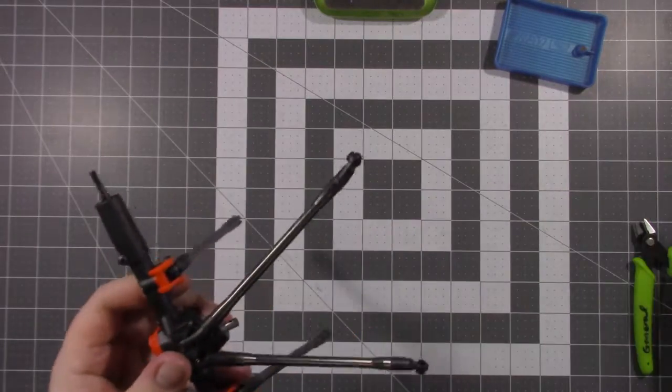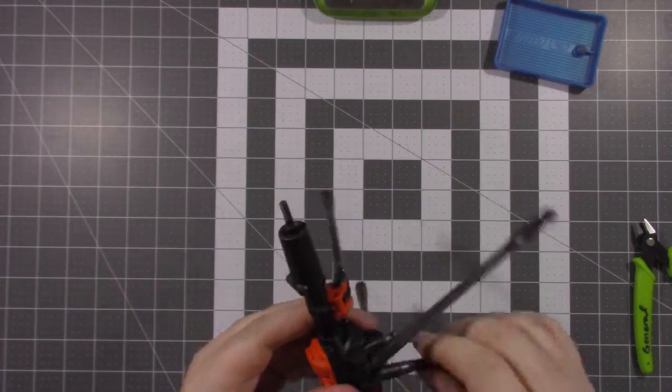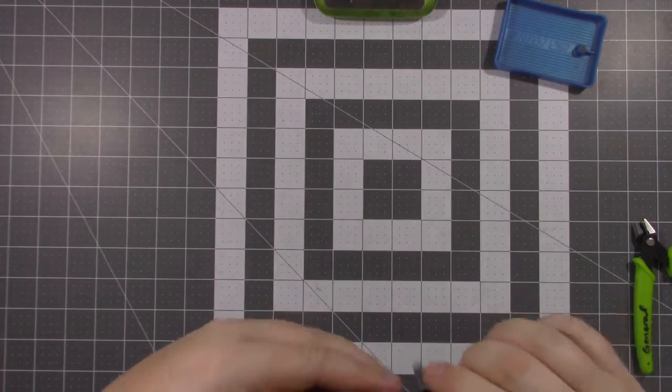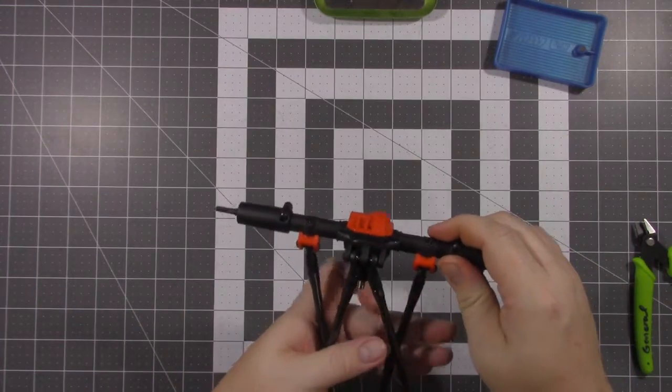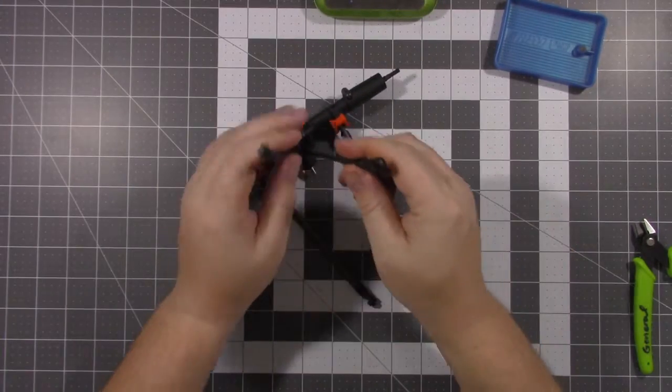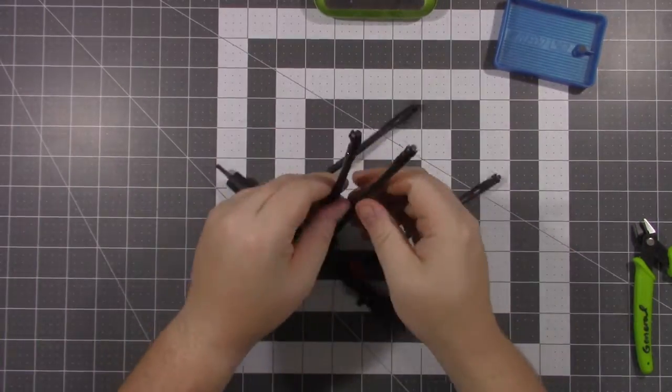Now you don't want to over tighten these because you can strip out that plastic really easy. Plus these don't need to be really tight. The bolt's not going to back out of the plastic. Another little tip, make sure when you install these that the upper links, the other end is pointing up.